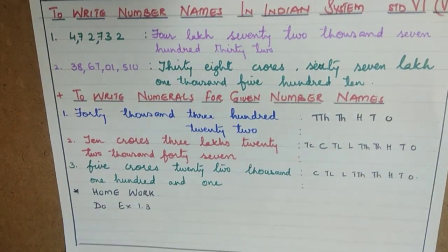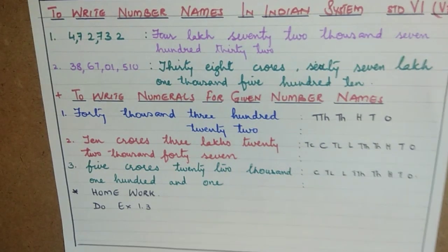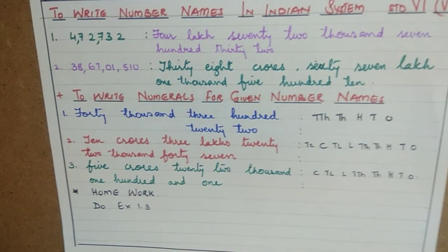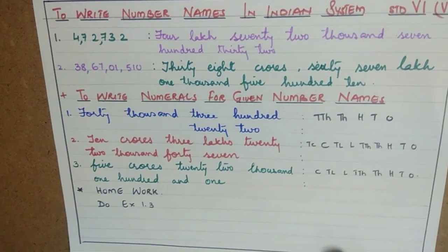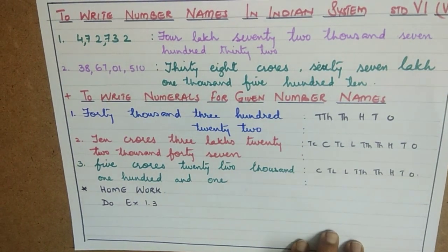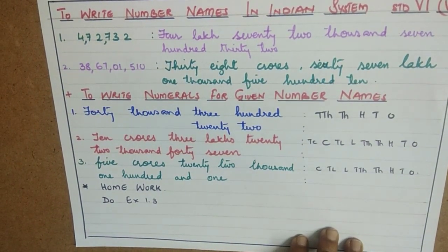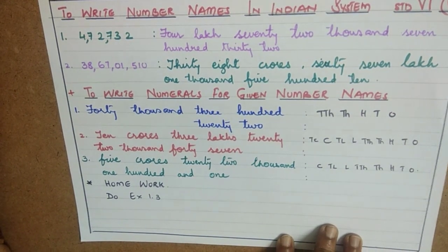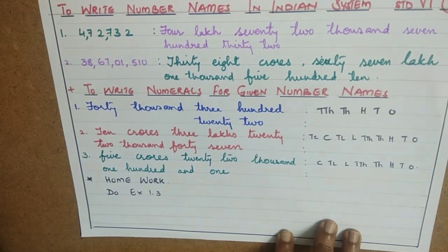Good morning children. I think all of you have completed the given homework in exercises 1.2 and 1.3. So now let us move on to number names. You have already learnt last year the Indian system and international system. I will give you 2 or 3 examples so that you can work out exercise 1.3 yourself.